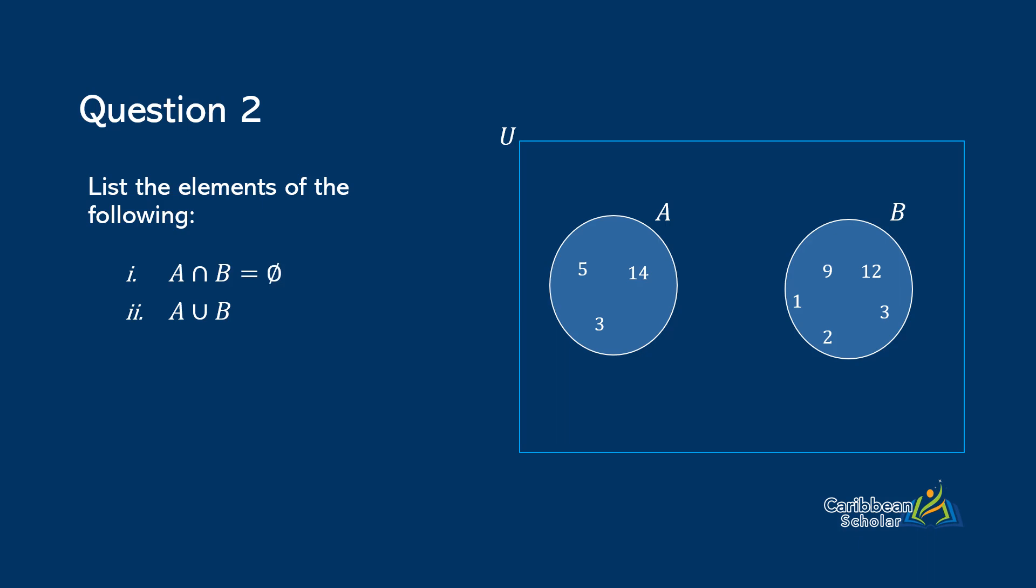And now we move on to part two, A union B. We want to list each number in A or B only one time. So we say five, fourteen, three, and then we move on to nine, one, twelve, two and three.